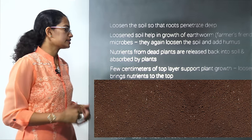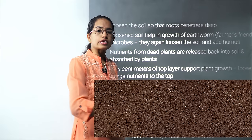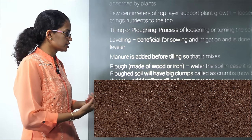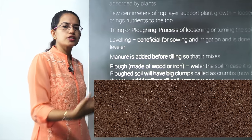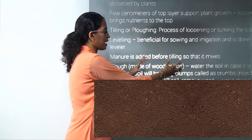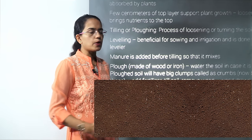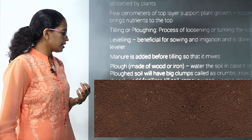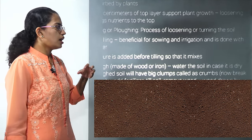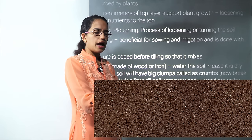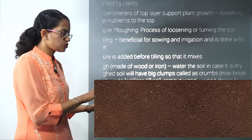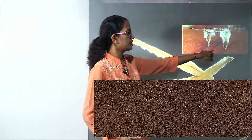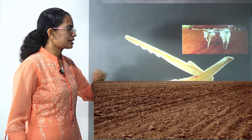For leveling the soil you require a leveler. For digging the soil, you require a plow — initially a wooden plow, and now an iron plow. Once the soil is plowed you add manure and fertilizer. The tilling requires a plowshare, which is a triangular iron strip moved by bullocks to loosen the soil.